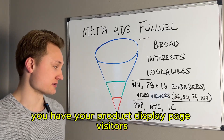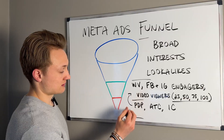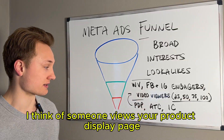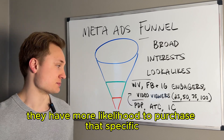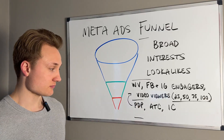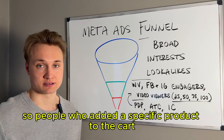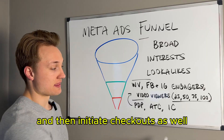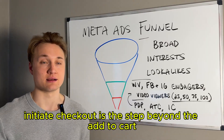At the bottom of your funnel, you have your product display page visitors — this could also be considered a middle funnel audience. If someone views your product display page, they have more likelihood to purchase that specific product than a general website visitor. Then you have add to cart — people who added a product to the cart and didn't purchase — and initiate checkout, which is the step beyond add to cart.